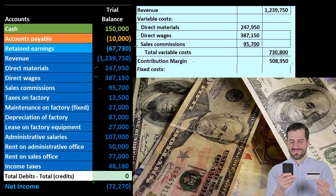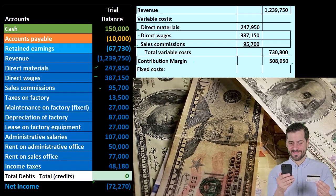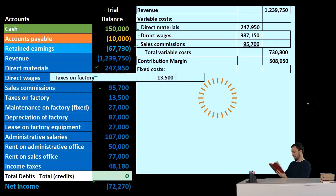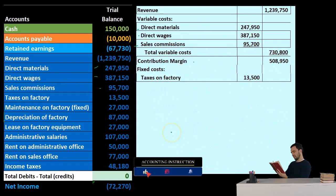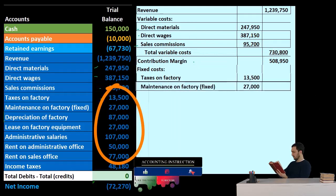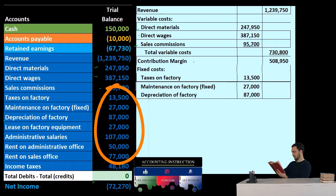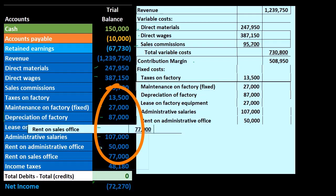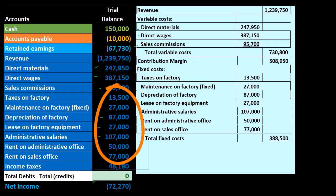Rent is fixed — whether we produce more or less, we typically pay the same rent, at least up to a certain level. So the fixed costs here include: taxes on the factory, maintenance on the factory, depreciation on the factory, lease on the factory, administrative costs, and rent on the administration and sales office — giving us the total fixed costs.